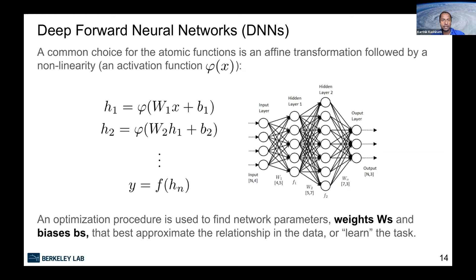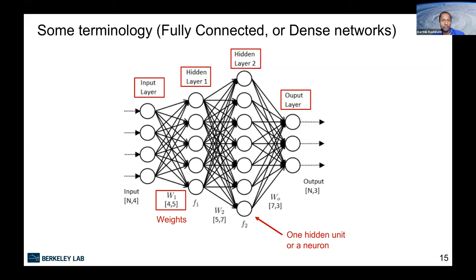A little terminology: you have your input layer, which is all of your inputs X. As they go through these functions you get activations, which are the features. These go into hidden layers — in this case, hidden layers one and two — followed by the output layer, which gives you your outputs. The weights are the different W's, and there are millions of these weights in deep neural networks. One particular neuron is the hidden unit, which is where the transformation happens.